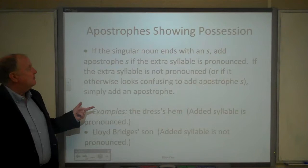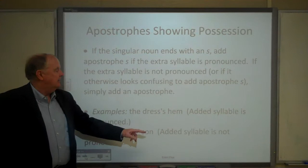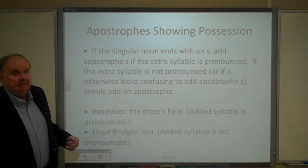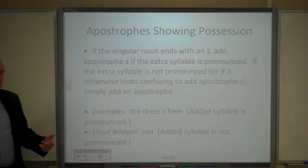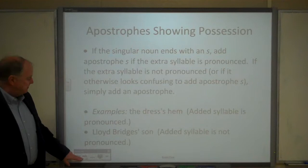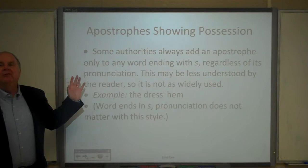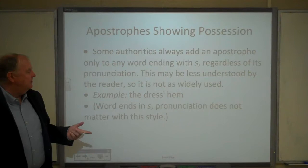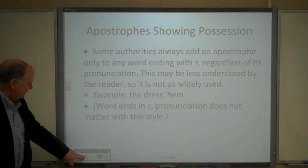If a singular noun ends with an S, add an apostrophe S if the extra syllable is pronounced. If the extra syllable is not pronounced, or if it otherwise looks confusing, simply add an apostrophe. So 'the dress's hem' takes apostrophe S — that's how we pronounce it. However, 'Lloyd Bridges' son' — we don't add an extra syllable when we pronounce it, so we just spell it with the apostrophe without S. Some authorities always add apostrophe S to any word ending with S, but I would avoid this as most authorities don't do that and it can be confusing.